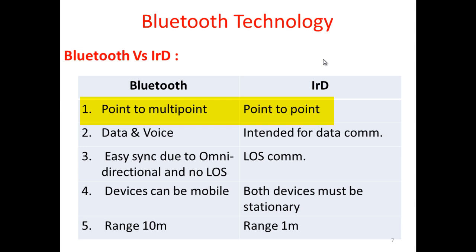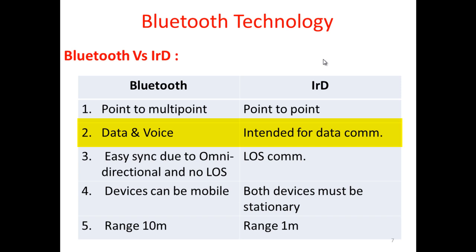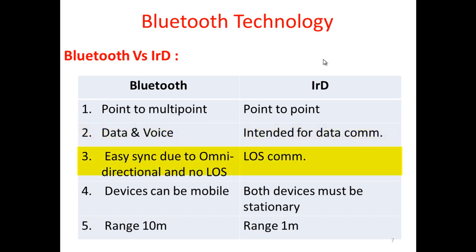There is a difference between Bluetooth and infrared technology. Bluetooth supports point-to-multipoint devices, while the drawback of infrared is that it is a point-to-point device. Bluetooth communicates both data and device information, whereas infrared only communicates data. Bluetooth also has low thermal communication and is easily connected in a multipoint environment.